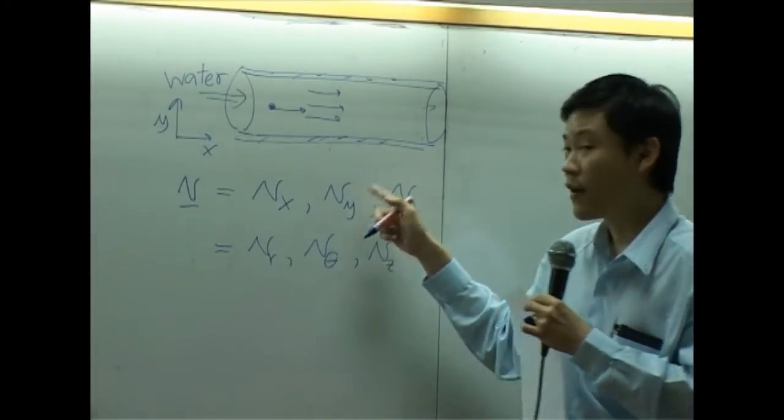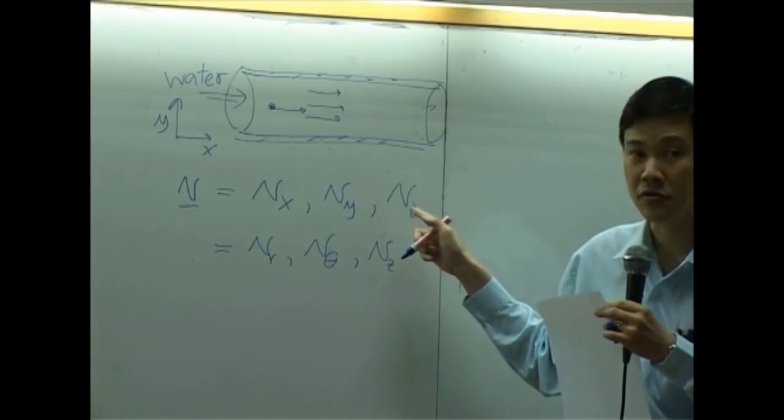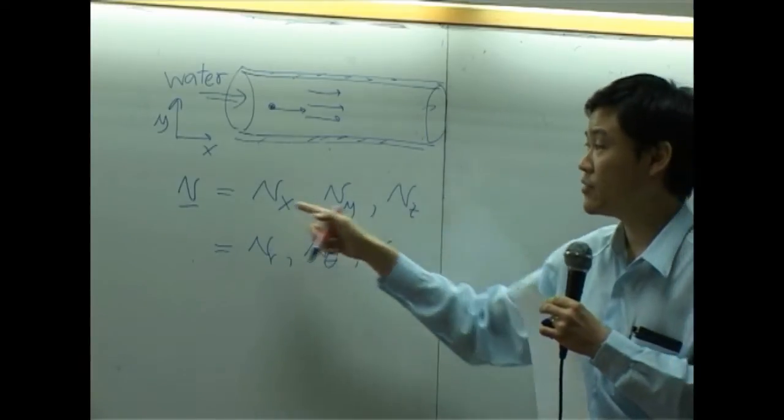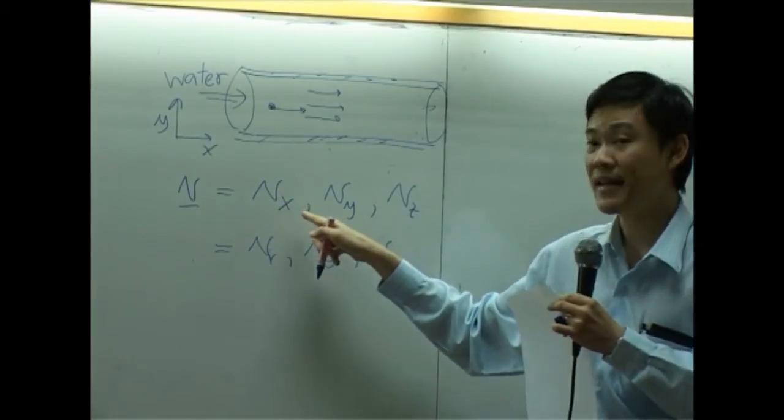If velocity component y and z are equal to zero, that means your net vector should have the same direction as x-axis.